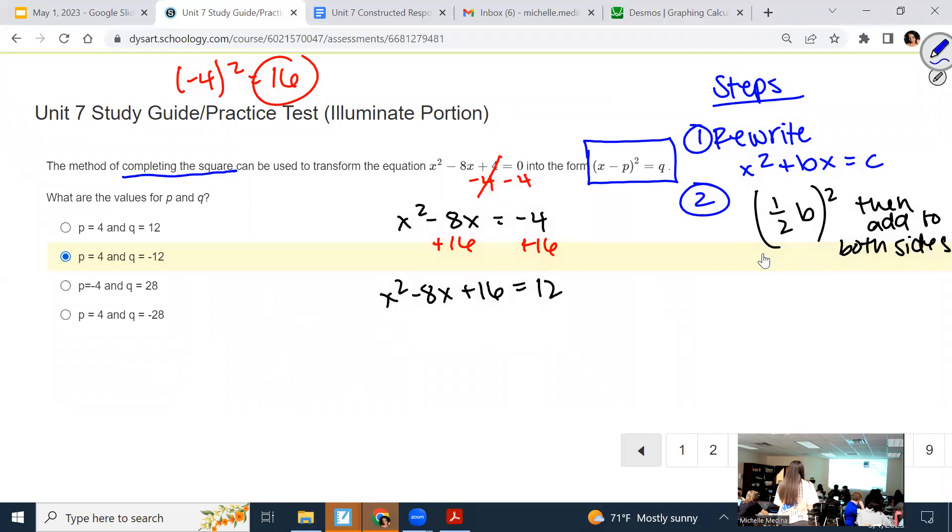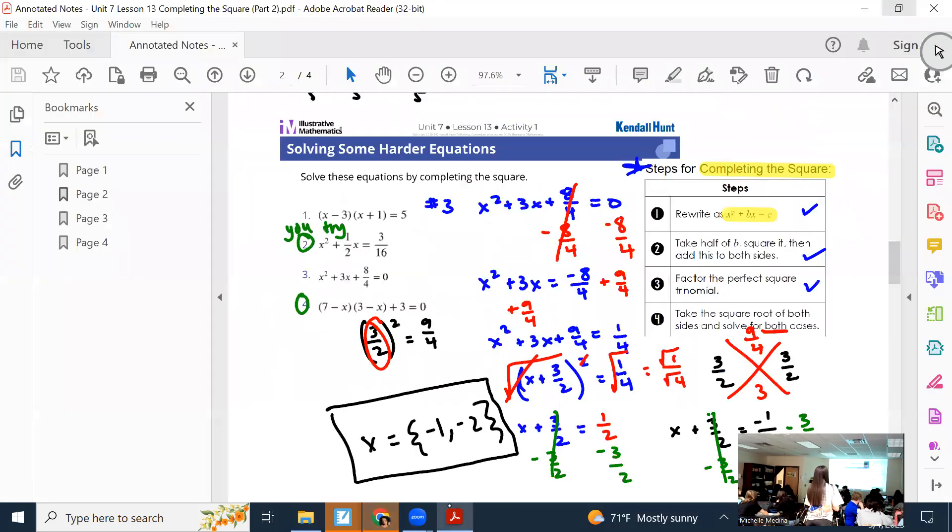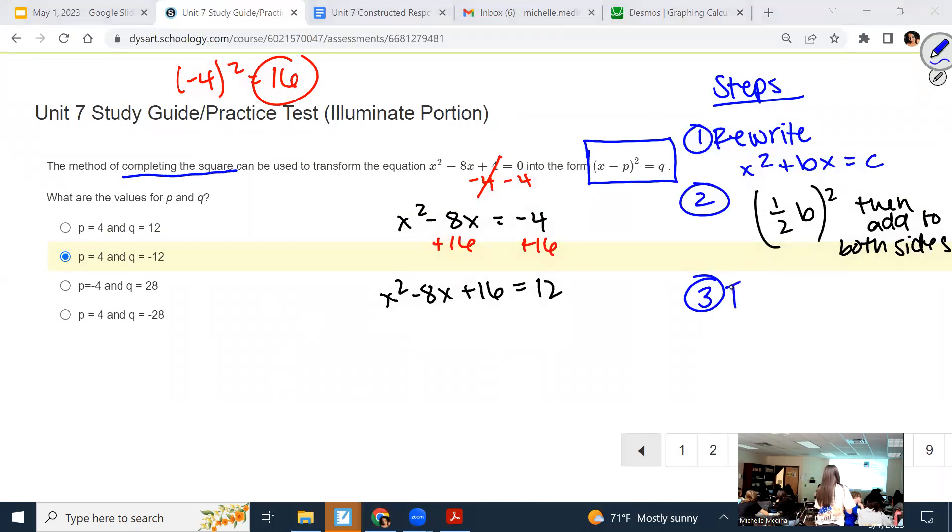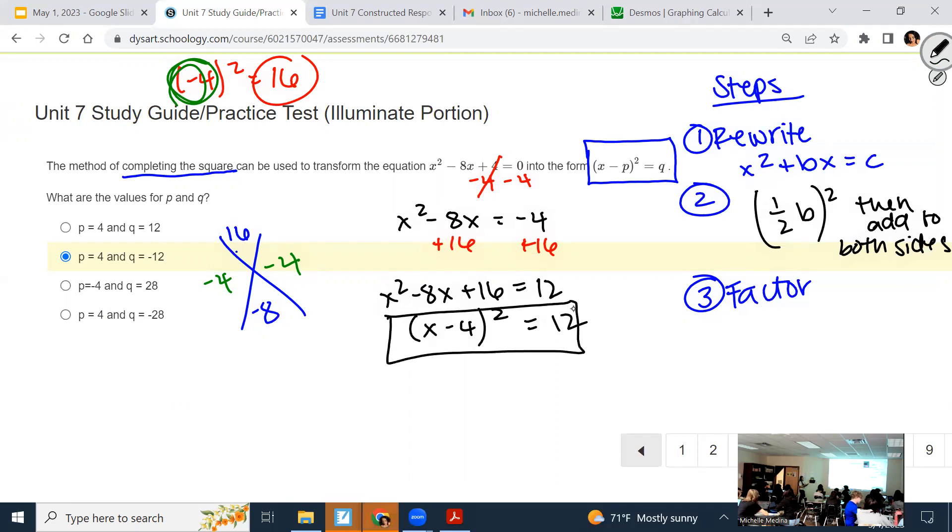So step 2 was taking half of b, and then squaring it, and then add to both sides. All right, so now step 3 is to, and I'm not making this up from the notes, factor the perfect square trinomial. Factor the trinomial. Because it's a perfect square, I should have the same thing here and here. So set up your diamond. What multiplies to 16, adds to negative 8? Negative 4 and negative 4. And for these, what I've noticed is that it usually ends up being whatever half of b was. That's what I've noticed. So then when you write it, because it's the same thing here and here, you can write it as x minus 4 in parentheses squared equal to 12.